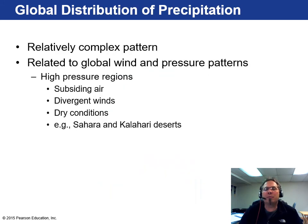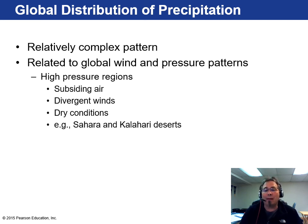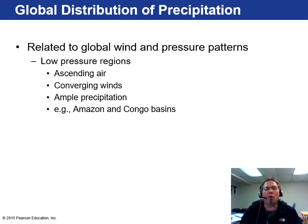Globally, the distribution of precipitation is complex and related to global wind and pressure patterns. In high pressure regions with subsiding, diverging winds, you typically get dry conditions — for example, the Sahara and Kalahari deserts at around 30 degrees latitude, or places like San Diego and Las Vegas that are stuck in high pressure zones. In contrast, low pressure regions with converging winds produce lots of precipitation, like the Amazon and Congo basins at the equatorial regions, where rising air and abundant moisture create conditions conducive to heavy rainfall.